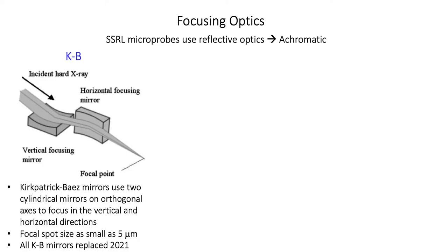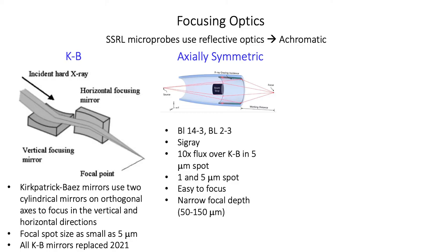All of SSRL's microprobe beamlines use reflective optics, which are achromatic — meaning we can use the same optic across a very broad energy range spanning thousands of eV. All of our SSRL beamlines used to have KB mirrors, or Kirkpatrick-Baez mirrors, which are commonly used at micro-XRF beamlines around the world. This system utilizes two cylindrical mirrors on orthogonal axes to focus the beam vertically and then horizontally, obtaining a spot size as small as five microns.